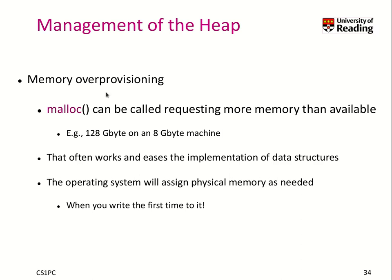Let's talk about memory over-provisioning. When you call malloc, you can request as much memory as you like — for example, 128 gigabytes on an 8 gigabyte machine. This is sometimes useful because certain data structures are easier to work with when you allocate larger chunks of memory. You can do this because of virtual address space: the memory is not actually mapped to any hardware, but only assigned when you need it. The first time you write any byte to it, the pages get allocated, as we discussed.